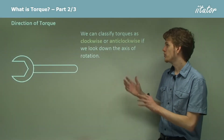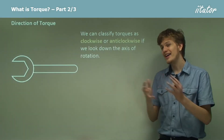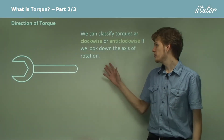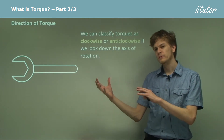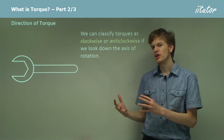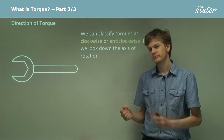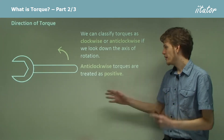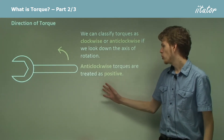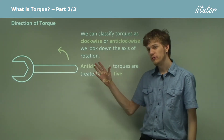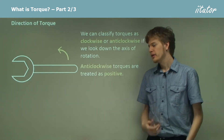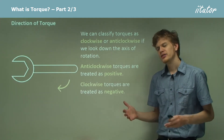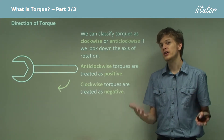We can classify torques as clockwise or anti-clockwise, depending on which direction they're going. We can talk about anti-clockwise torques being positive and clockwise torques as negative, just as a convenient convention.